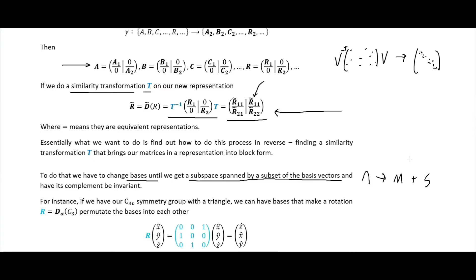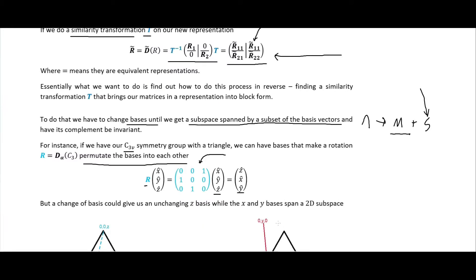We need an s-dimensional subspace where s is invariant, so we can perform transformations that only transform things in the m-dimensional part of the subspace. For instance, if we have our C3v symmetry group with the triangle as we've been using as an example, we can have bases that make a rotation — permuting the bases into each other. That would be a matrix that looks like this, doing a rotation that takes x, y, z and turns it into z, x, y, just permuting the different bases into each other.